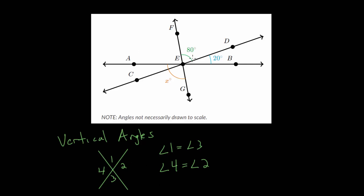Whenever you have vertical angles — angles opposite each other — they are going to be equal. Since we do have intersecting lines here, we have a couple pairs of them. Notice we have this 80-degree angle FED, and if we continue those lines we can figure out its vertical angle. The one across from it is angle CEG, so angle CEG is also 80 degrees.